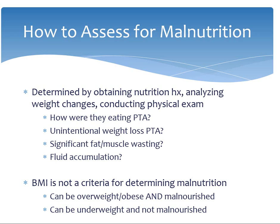For example, a patient with a BMI of 35 may have lost 30 pounds in the last month due to critical illness and decreased appetite and therefore be diagnosed with malnutrition. And on the other end of the spectrum, you can have a patient who has a BMI of 17 who is naturally thin with a great appetite and very stable weights prior to admission and therefore not be malnourished.